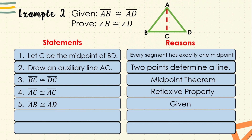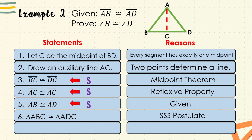Number six: by using statements three, four, and five, we can conclude that triangle ABC is congruent to triangle ADC, because the three sides of triangle ABC are congruent to the three sides of triangle ADC. This is because of the SSS or side-side-side postulate. Lastly, number seven: based on statement six, angle B is congruent to angle D, because of CPCTC — corresponding parts of congruent triangles are congruent.